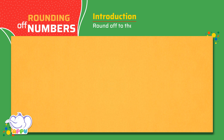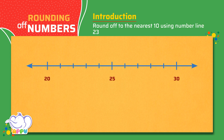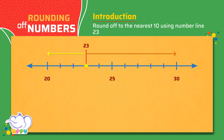Round off to the nearest 10 using a number line — 23. 23 rounded to the nearest 10 is 20. We can see that 23 is closer to 20 than it is to 30.